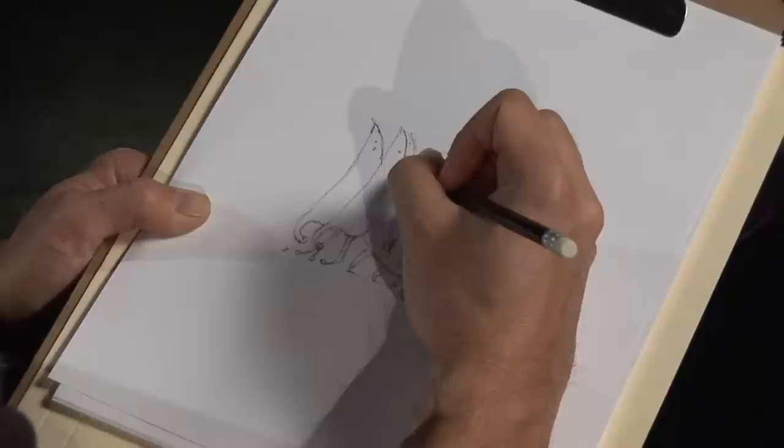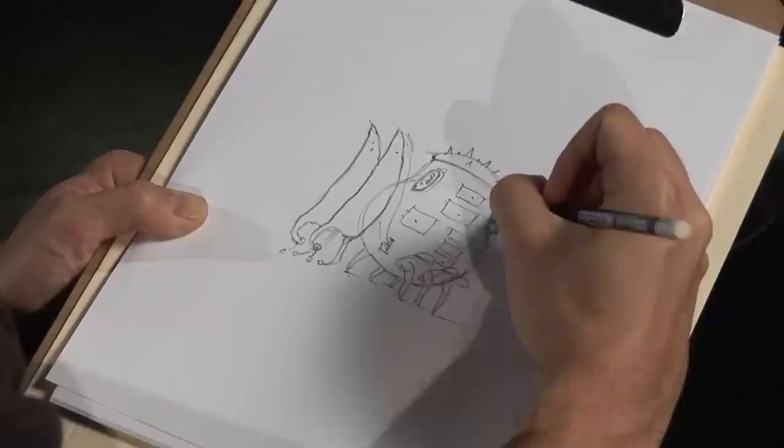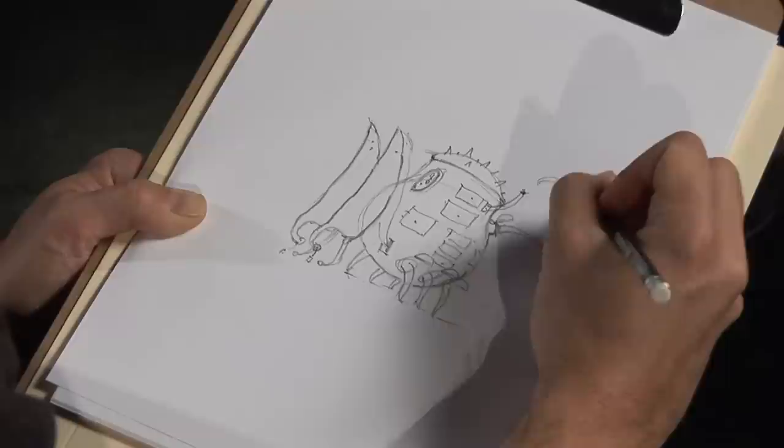So yeah, very complicated character but he's also got some little snorkel for breathing. A very complicated character but essentially a ball. A ball with some things attached to it.